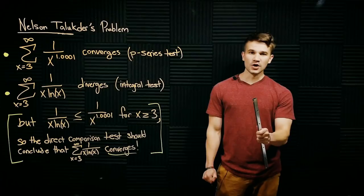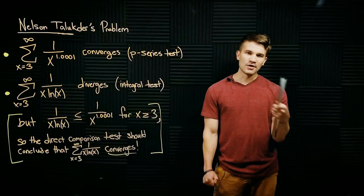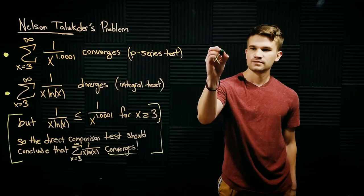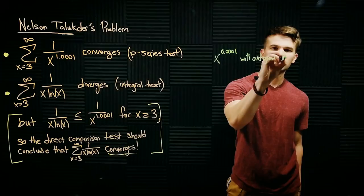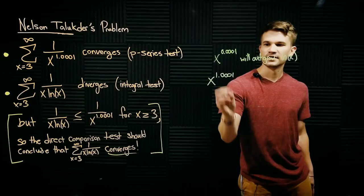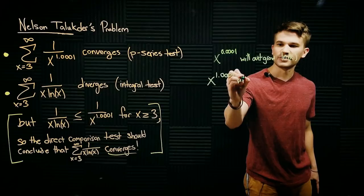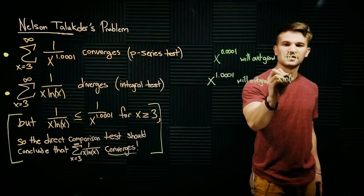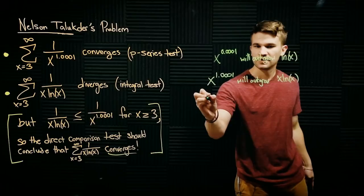So here's what I was told on Math Stack Exchange. We know that for any positive power of x, it will eventually outgrow the natural log of x. So in particular, this will outgrow the natural log of x. So this is the case. Well, that also means that x to the 1.0001, which is representing a multiplication by x here, this will outgrow, just do the same thing here, x natural log of x.